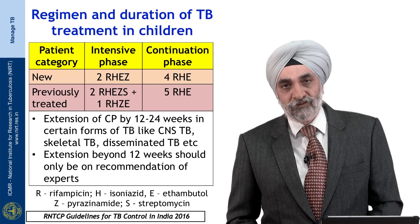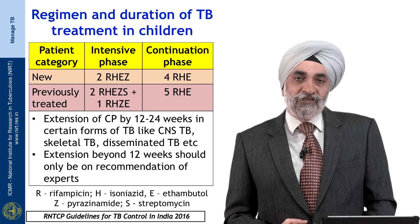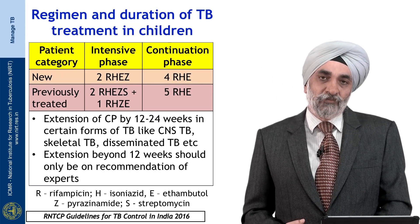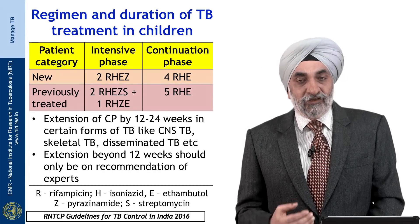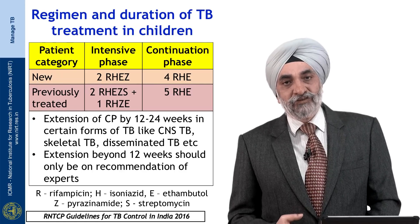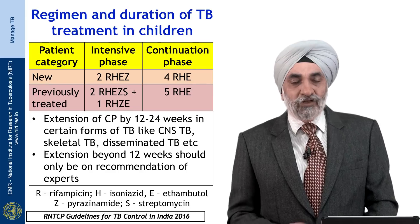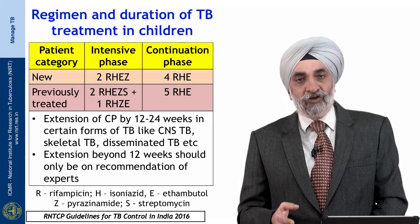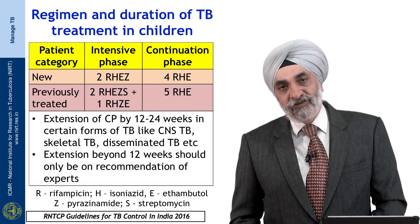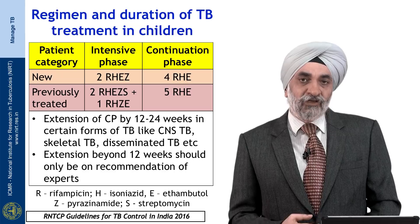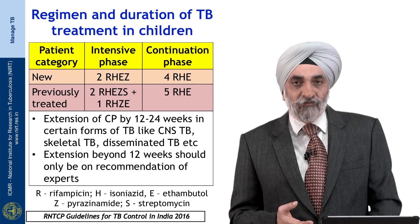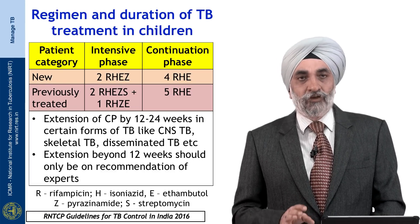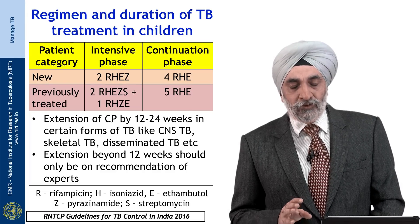The intensive phase is given for 2 months. The continuation phase consists of rifampicin, INH, and ethambutol for 4 months in most situations, except for some extra-pulmonary forms such as TB meningitis and osteoarticular TB where it is extended up to 12 months. So the recommendation is 6 months total for most situations — pulmonary or extra-pulmonary such as skin or lymph node TB — but 12 months for extra-pulmonary TB involving the CNS or bone.